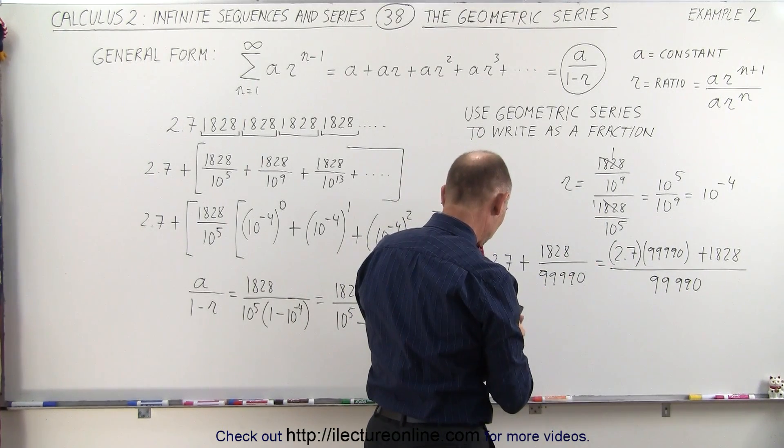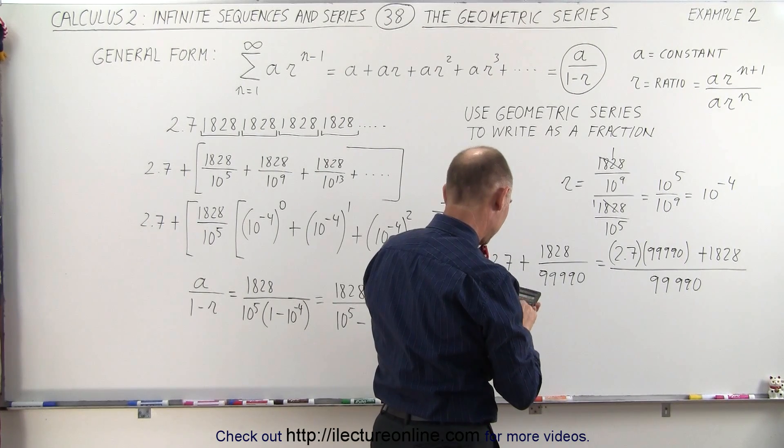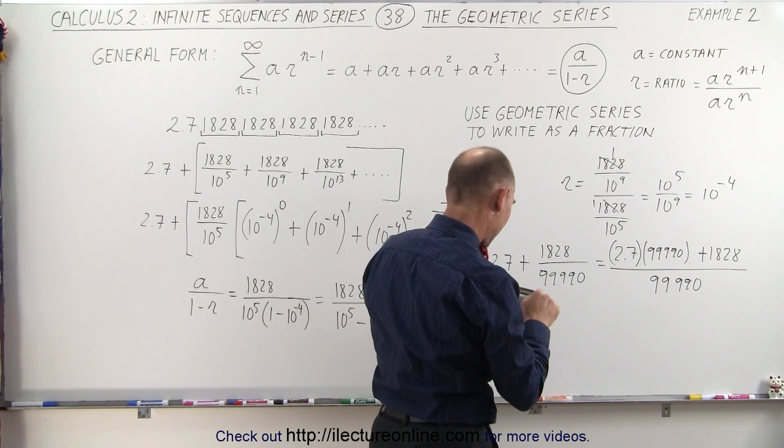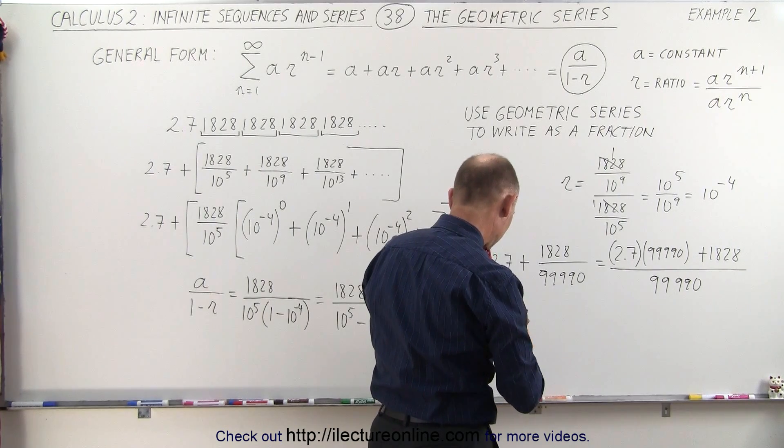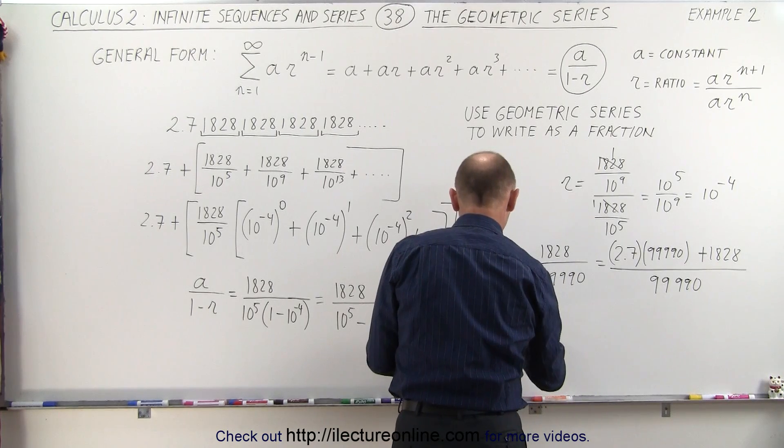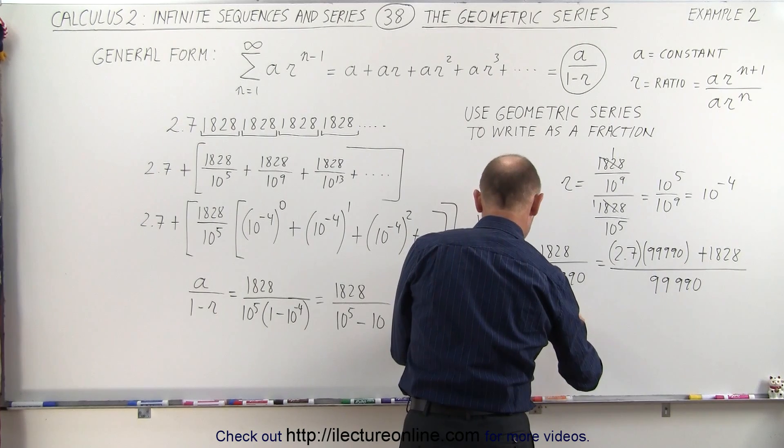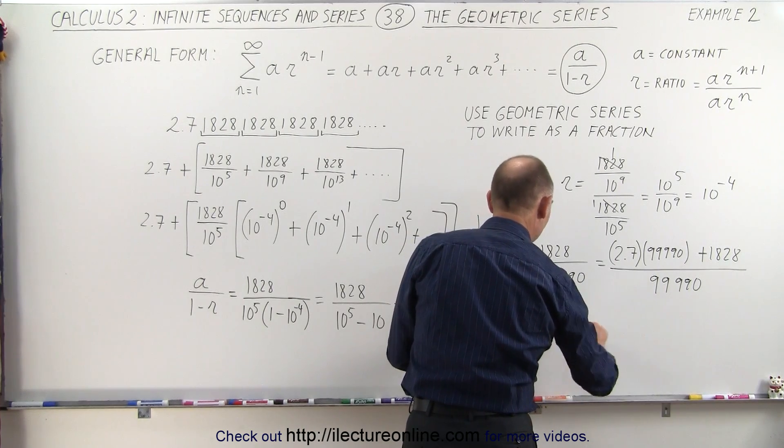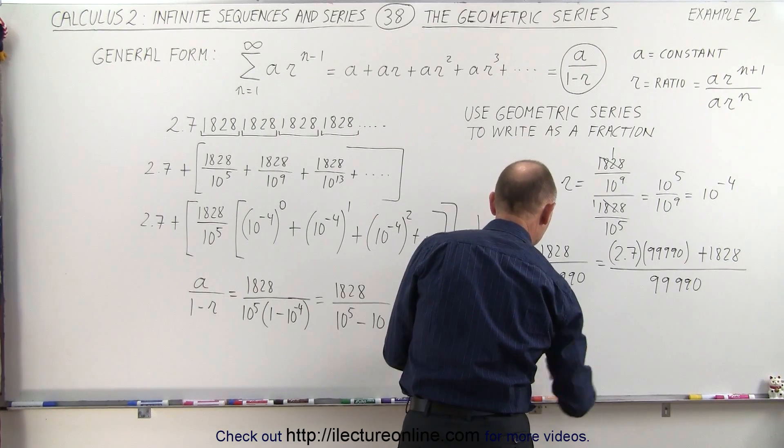So the numerator becomes 2.7 times 99990 equals add to that, or let me write it out. So plus 1828. So we end up with this is equal to 271,801 divided by 99,990.